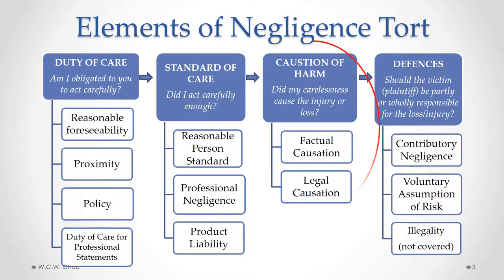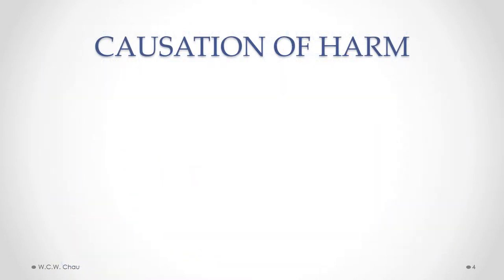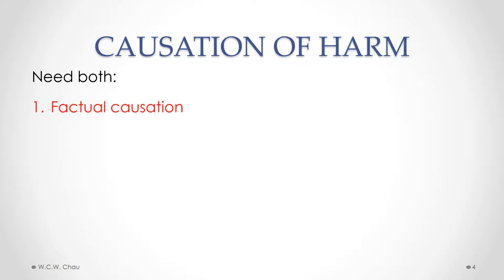We will look at the two types of causation that need to be satisfied: factual causation and legal causation. To hold someone liable for negligence, the third element, causation of harm, must be shown. Causation of harm involves two different types of causation: the first is factual causation, and the second is legal causation.